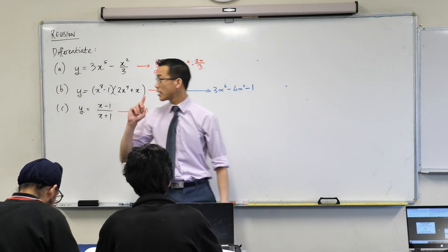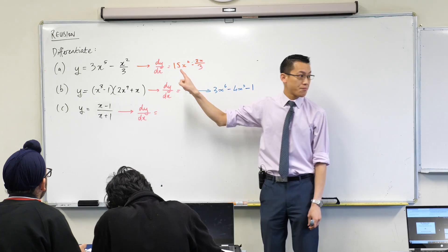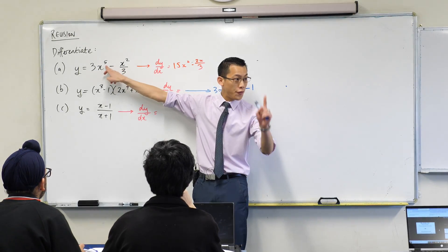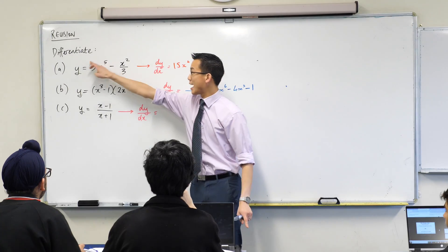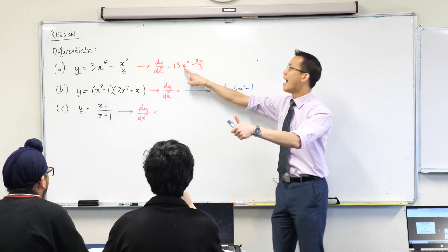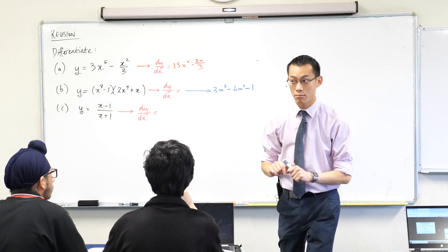How did we get to this answer? Let's start with the first term 15x to the 4. Where's that 15 from? Yeah very good, so what we've done is we've taken this power and we've said first very first thing we're going to bring that out the front so 5 times 3 is 15, fantastic, and then we will subtract 1 from the power. Are we okay with that so far? Looks good, thumbs up.